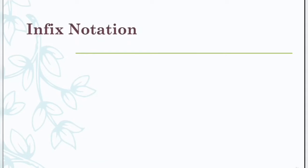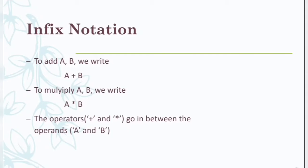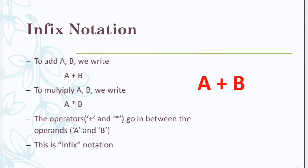The first one is infix notation. To add A and B we write it as A plus B, and to multiply A and B we write A into B. The operators plus and into go in between the operands A and B. So this is the infix notation — whenever the operator is between the operands, it is called infix notation or infix expression.